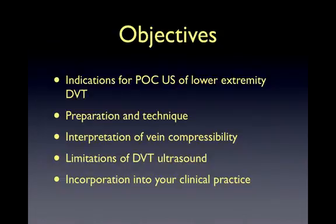Venous thromboembolism is the spectrum of disease from DVT to pulmonary embolism. It's a life-threatening condition with high incidence in the emergency department. Point-of-care ultrasound is both sensitive and specific for identifying proximal lower extremity DVTs. It's accurate, fast, non-invasive, inexpensive, and leads to early identification of DVT, early treatment, and improved patient care.